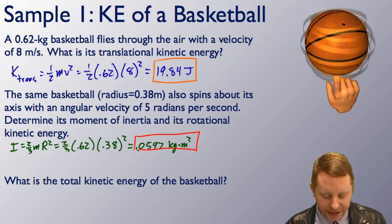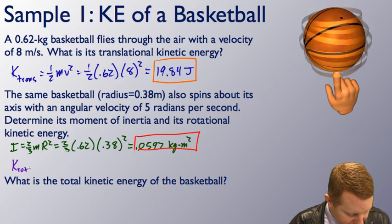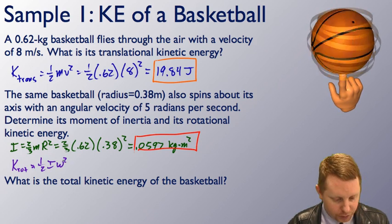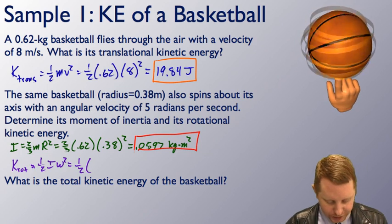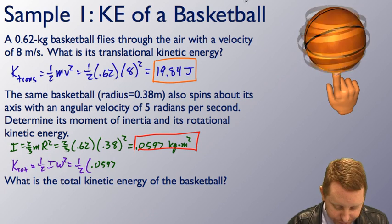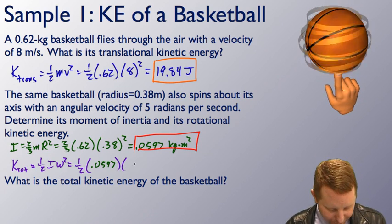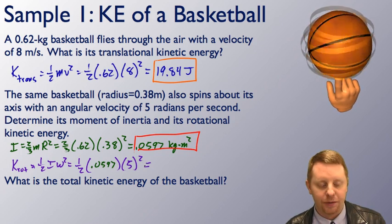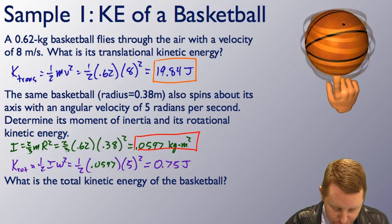To find the rotational kinetic energy, we use one-half I omega squared, which is one-half times 0.0597 times 5 radians per second squared, giving a rotational kinetic energy of about 0.75 joules.